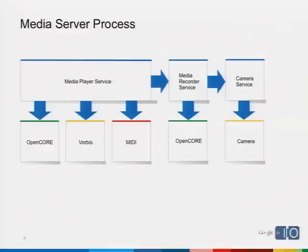The camera service operates in conjunction with the media recorder and also independently for still images. If your application wants to take a still image, you instantiate a camera object which is just a proxy for the camera service. The camera service handles preview for you — this provides a way for the preview frames to go directly out to the display. Your application doesn't have to worry about it. It just happens.